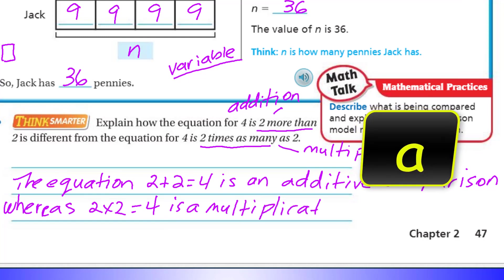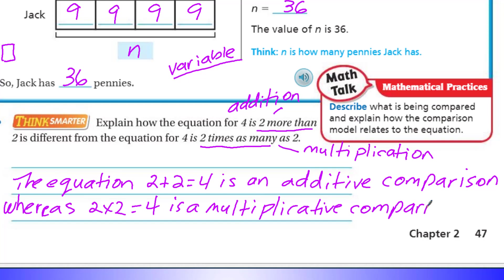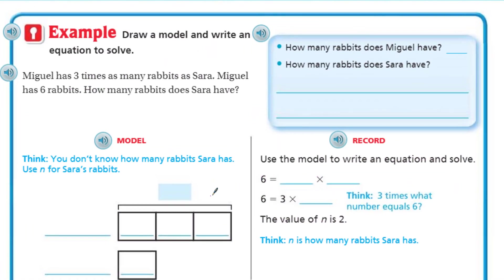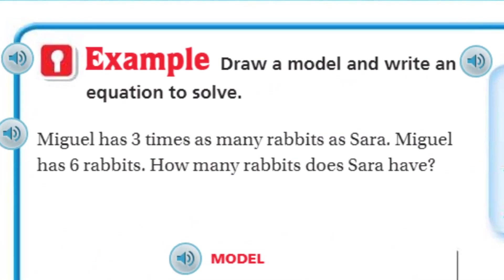Additive and multiplicative are adjectives, and comparison is the noun — adjectives modify nouns in English. Alright, we finished one page. Ready to go to the next page. Example: draw a model and write an equation to solve. Miguel has three times as many rabbits as Sarah. Miguel has six rabbits. How many rabbits does Sarah have?